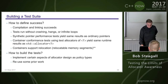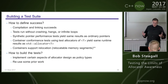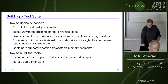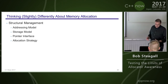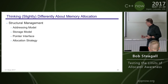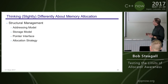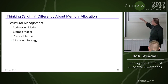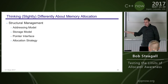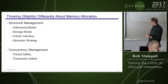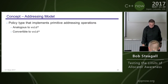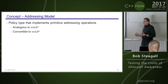Success is defined as: compilation and linking succeed; tests run without crashes, hangs, or infinite loops; synthetic pointer performance yields the same results as ordinary pointers; container conformance tests with test allocators give the same results as with std::allocator; and containers support relocation — can I relocate memory that a synthetic pointer points to and continue using the container? That relocation capability is implied by the allocator-aware container requirements, and we'll find it works in most cases but there's a surprising case where it does not.